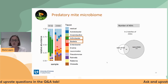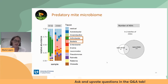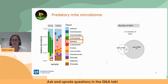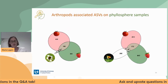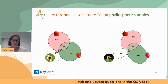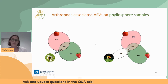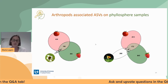Looking at the overlap between the two mite batches, even though their microbiomes are quite different, there are 48 ASVs that overlap. Looking further at overlap with the phyllosphere samples, there are also quite a few ASVs occurring both on tomatoes and strawberries and on bumblebees or predatory mites.